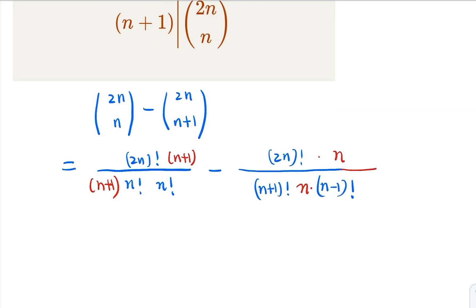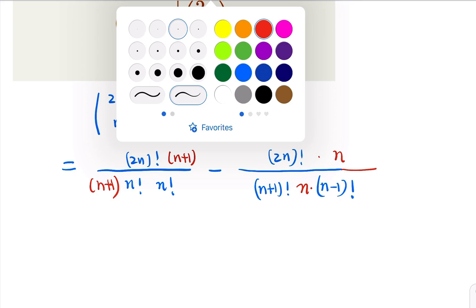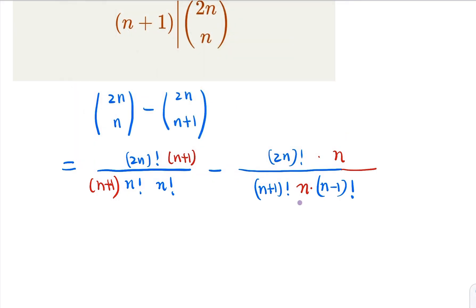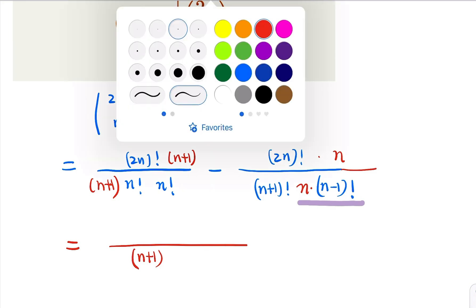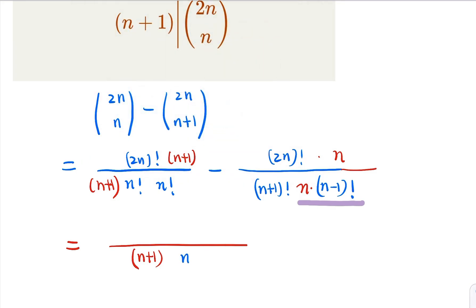So what we have here is that, notice that the two terms combined here is n factorial. So in other words, the denominator is going to be the same, which is n plus 1 times n factorial times n factorial for both fractions.